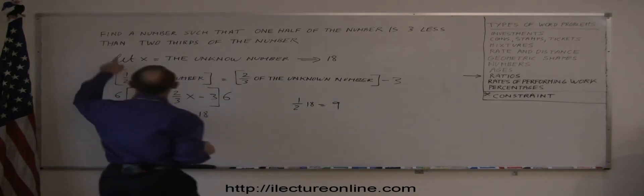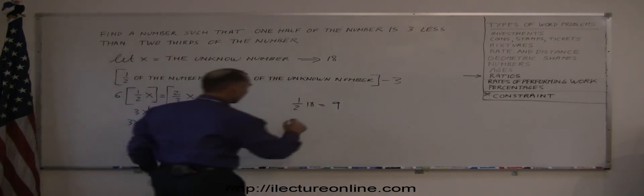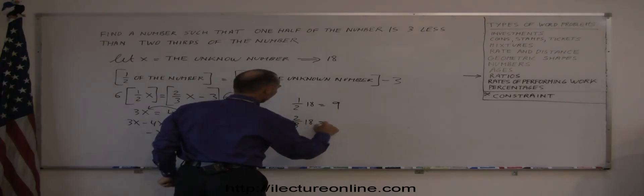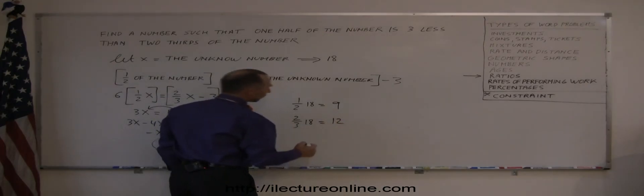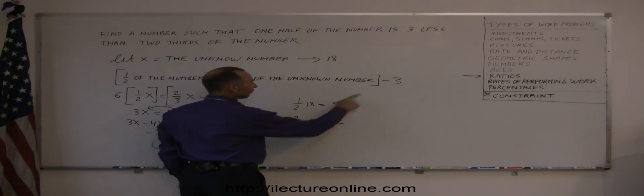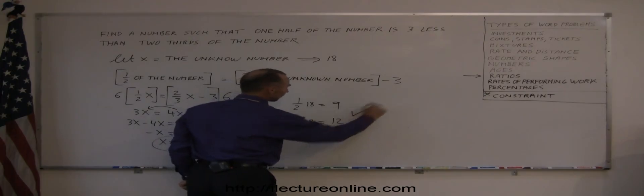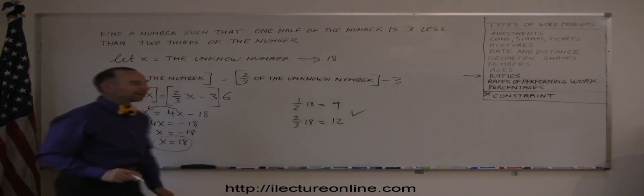And what is two-thirds of the number? Okay, well, two-thirds times eighteen is, eighteen divided by three is six. Six times two is twelve. And sure enough, nine is three less than twelve, so it looks like we found the right number.